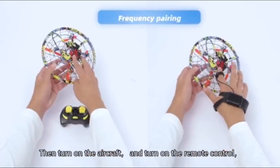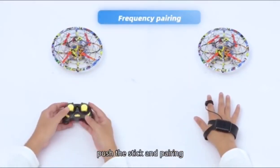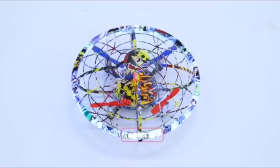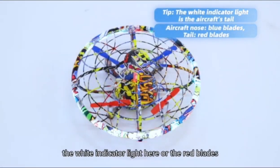Then turn on the aircraft and turn on the remote control. Push the stick and pair it. We can recognize the tail by the white indicator light here or the red blades.